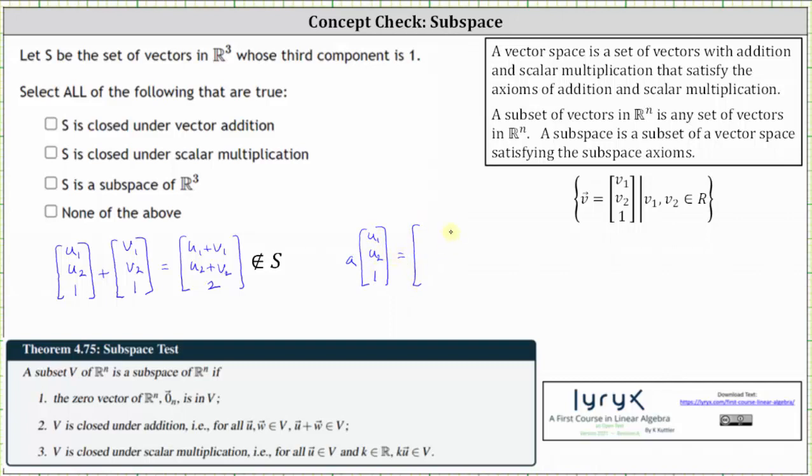Multiplying, the first component is A times U sub one, the second component is A times U sub two, and the third component is A times one, which is A.